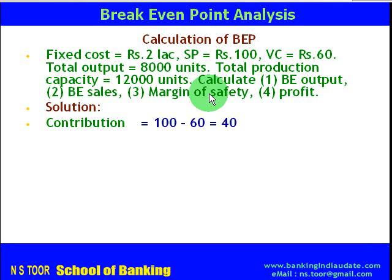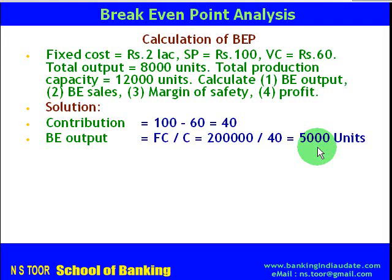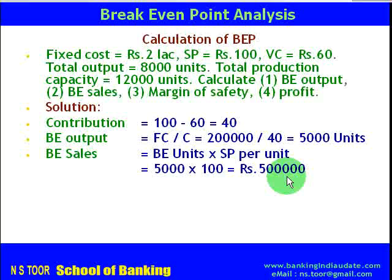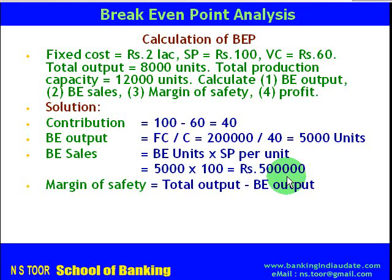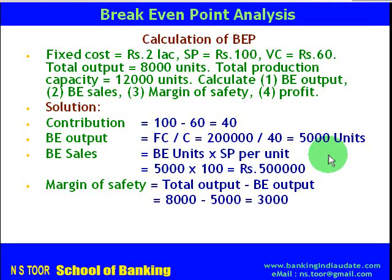First we calculate contribution: Rs 100 minus Rs 60 equals Rs 40. Breakeven output equals fixed cost divided by contribution per unit, so Rs 2 lakh divided by Rs 40 equals 5000 breakeven units. Breakeven sales equals breakeven units multiplied by selling price per unit: 5000 units multiplied by Rs 100 equals Rs 5 lakh. Margin of safety equals total output minus breakeven output: 8000 minus 5000 equals 3000 units.